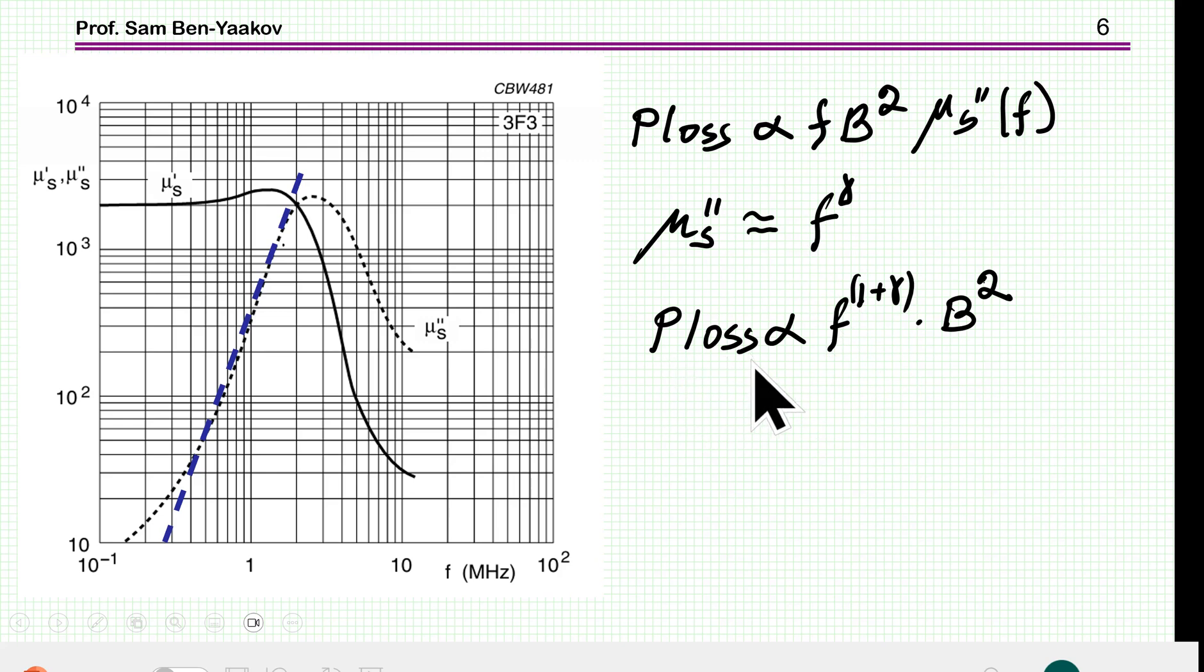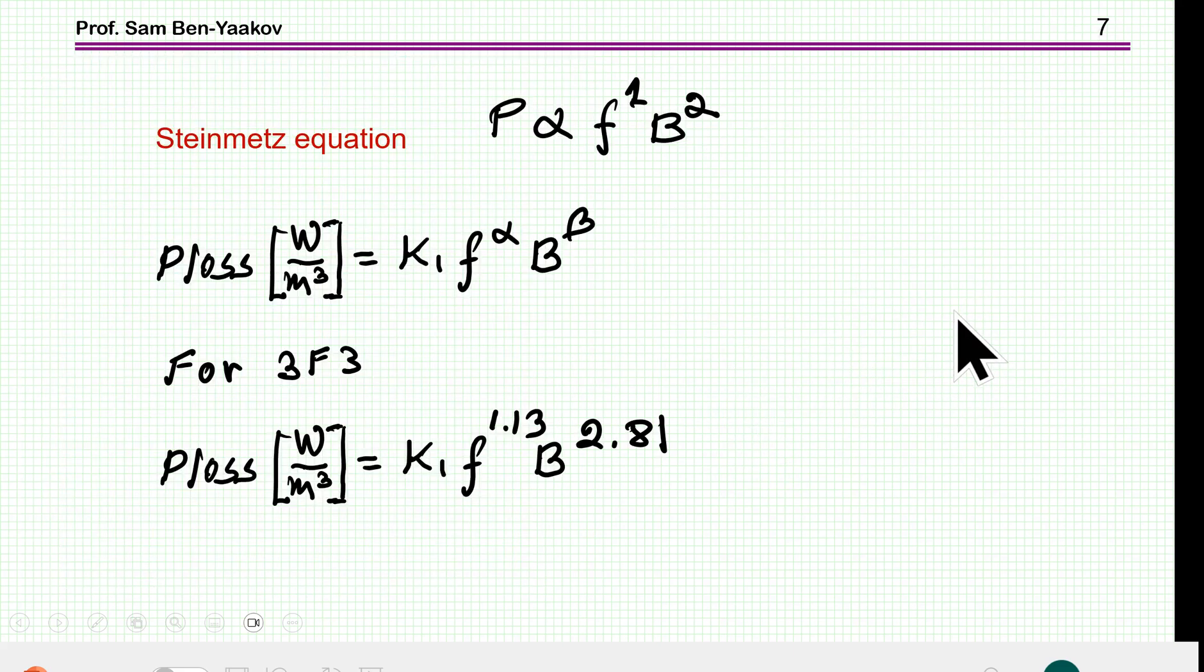So, it will be like the losses will be a function of the frequency to the power of something like larger than one, and then B squared. So, this approach of modeling of losses of the imaginary permeability leads us to this relationship or this estimate of losses, which are a function of frequency and magnetic flux density. Now, this is not new.